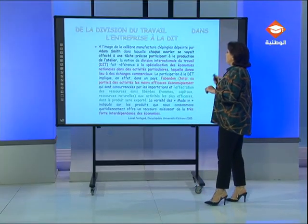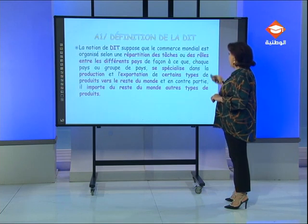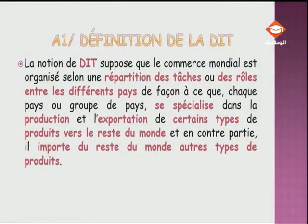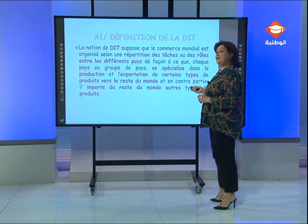Compte tenu de ce document, passons à la première prise de note. Première chose à avoir dans votre cahier : la définition de la DIT de façon générale. La notion de DIT suppose que le commerce mondial est organisé selon une répartition des tâches ou des rôles entre les différents pays, de façon à ce que chaque pays ou groupe de pays se spécialise dans la production et l'exportation de certains types de produits vers le reste du monde et, en contrepartie, importe du reste du monde d'autres types de produits.